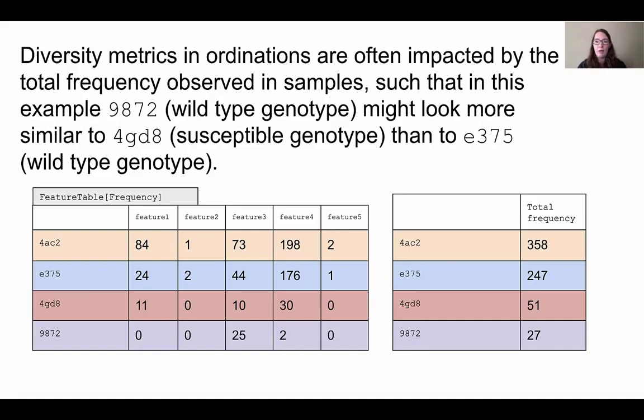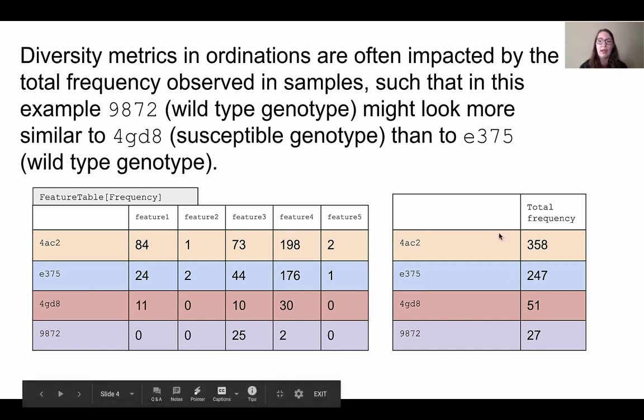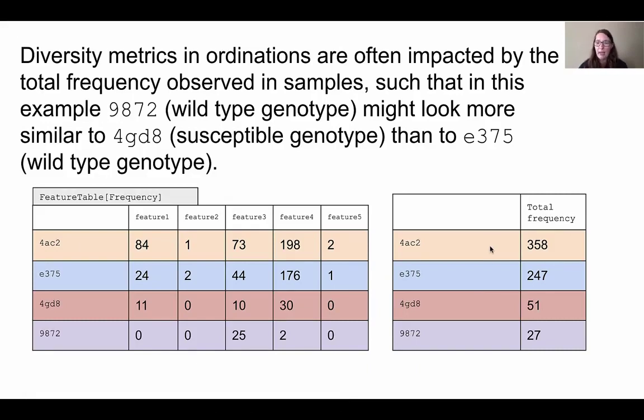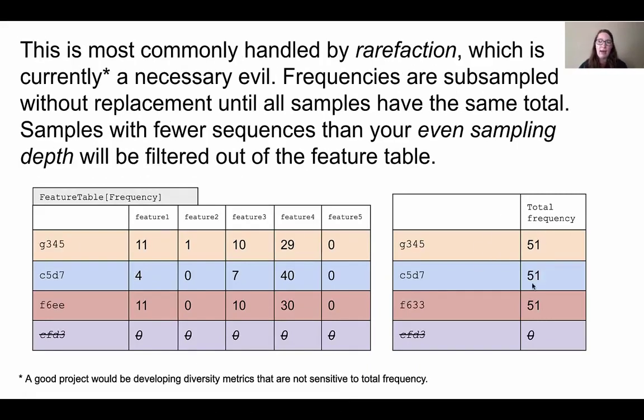Furthermore, we also lose information even from the samples we did choose to keep. For example, in this yellow sample before we had a frequency of 358, and now we have a total frequency of only 51. So we lose a high percentage of information that was present in that sample.